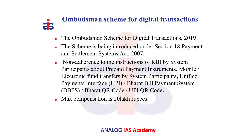Finally, the Ombudsman Scheme for Digital Transactions 2019 is introduced under Section 18 of the Payment and Settlement Systems Act, 2007. Non-adherence to RBI instructions by system participants regarding prepaid payment instruments, mobile or electronic fund transfers, UPI, Bharat Bill Payment System, Bharat QR code, and UPI QR code comes under this scheme. The maximum compensation is 20 lakh rupees.